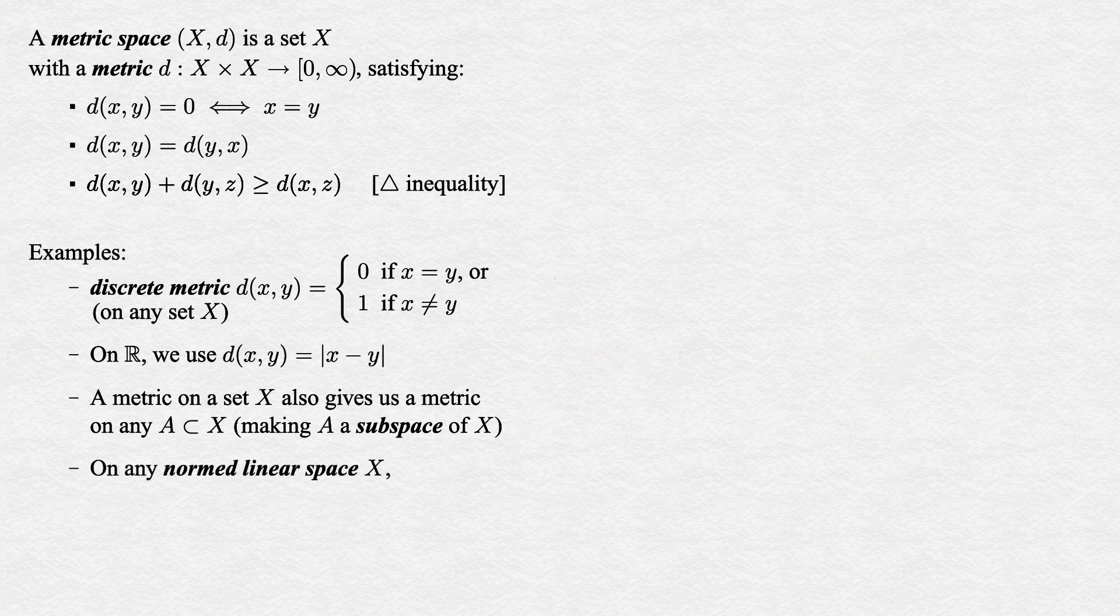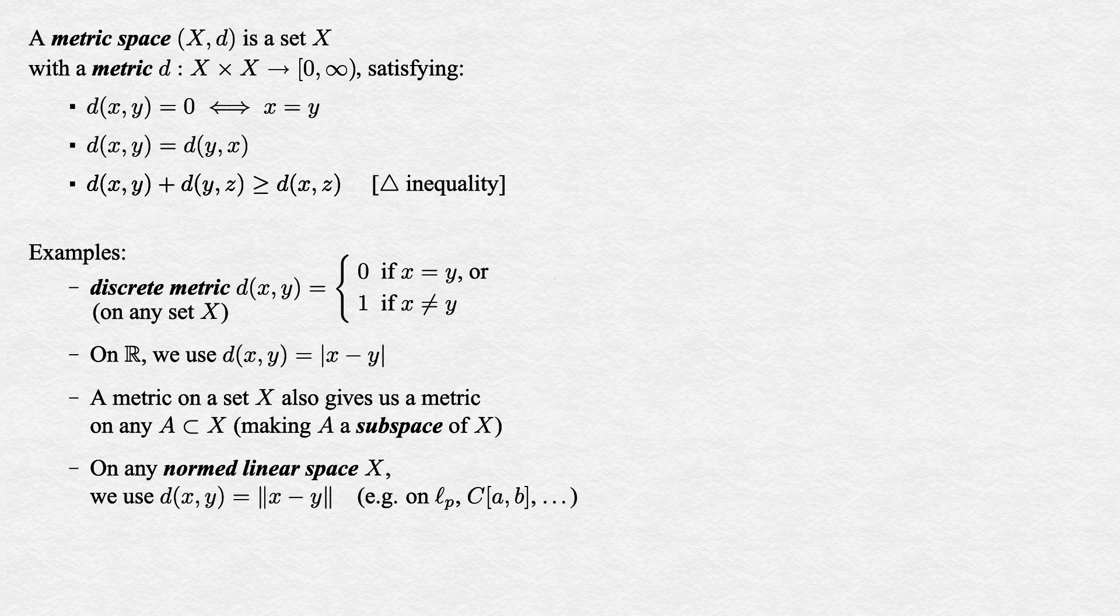Finally, any normed linear space, and we've seen quite a few, can be viewed as a metric space if we define d(x,y) as the norm of x minus y. The three axioms for a norm line up quite nicely to prove that this function is indeed a metric. Thus, our little lp spaces, our spaces of continuous functions on an interval, etc., all can be viewed as metric spaces.